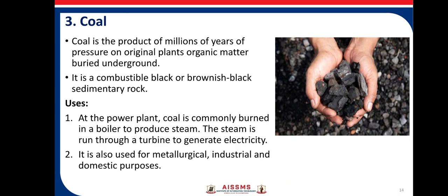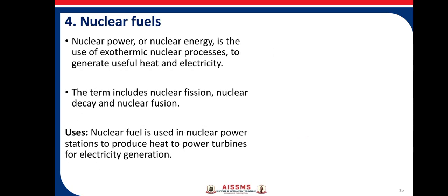Coal is a product of millions of years of pressure on original plants and organic matter buried underground. It is a black to brownish-black sedimentary rock, also called black diamond because it is the major source of energy for most industries in the country. Uses of coal: at power plants, coal is commonly burned in a boiler to produce steam; the steam is run through a turbine to generate electricity. It is also used for metallurgical, industrial, and domestic purposes.